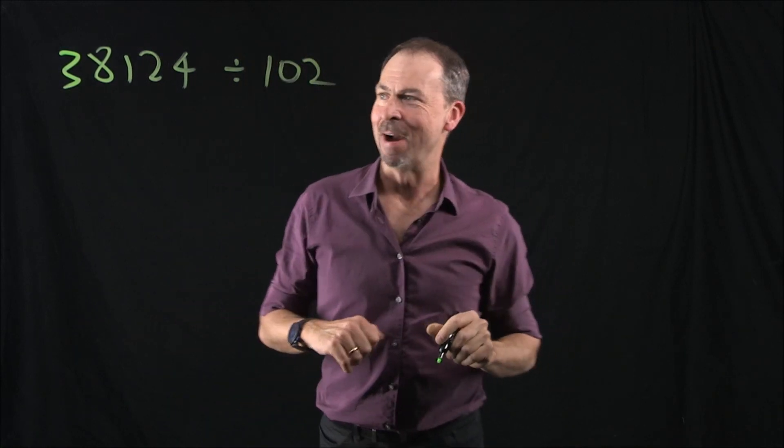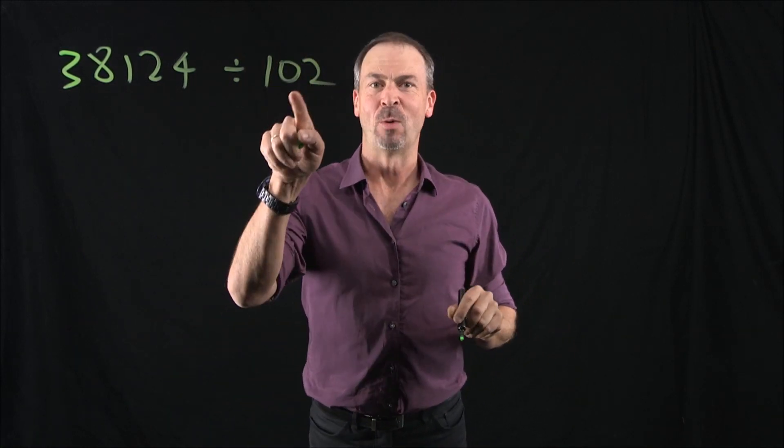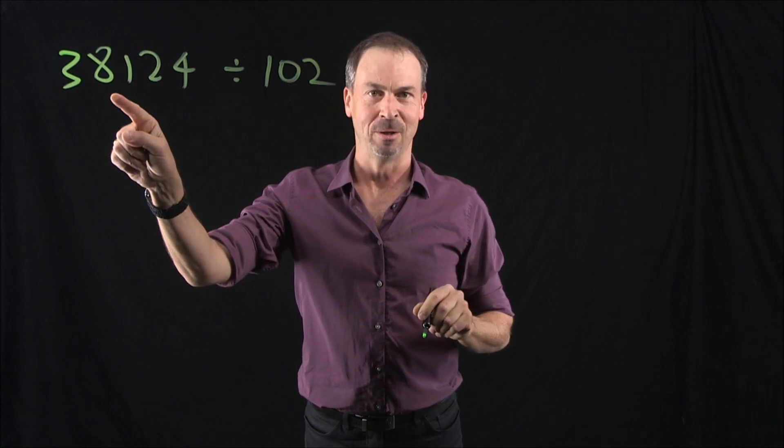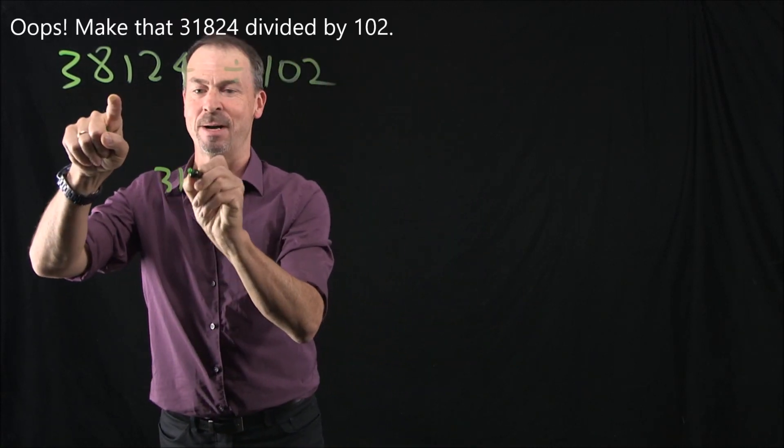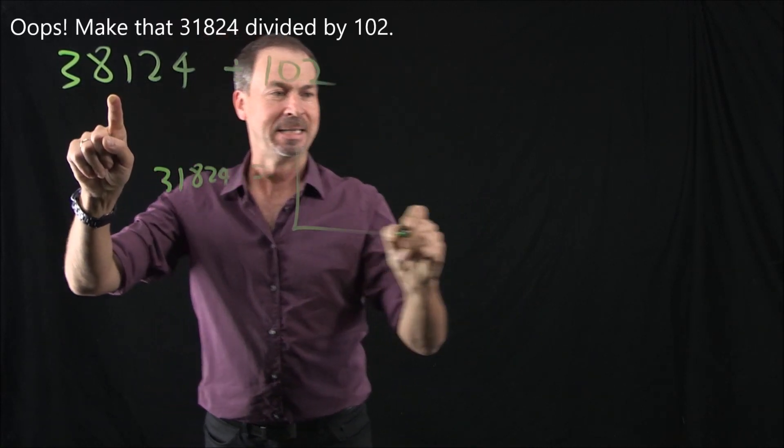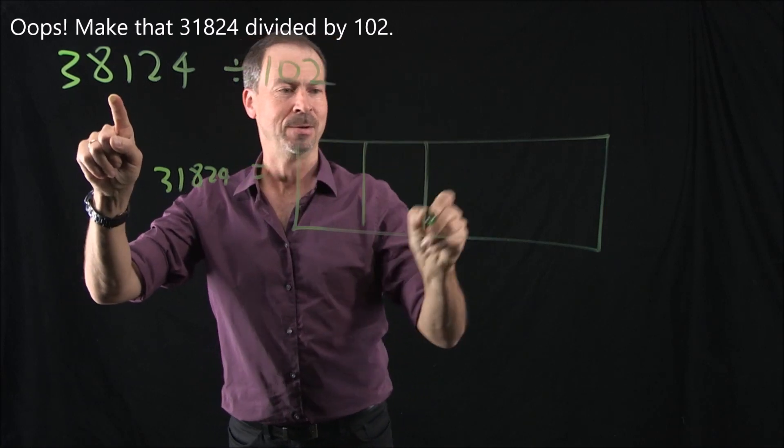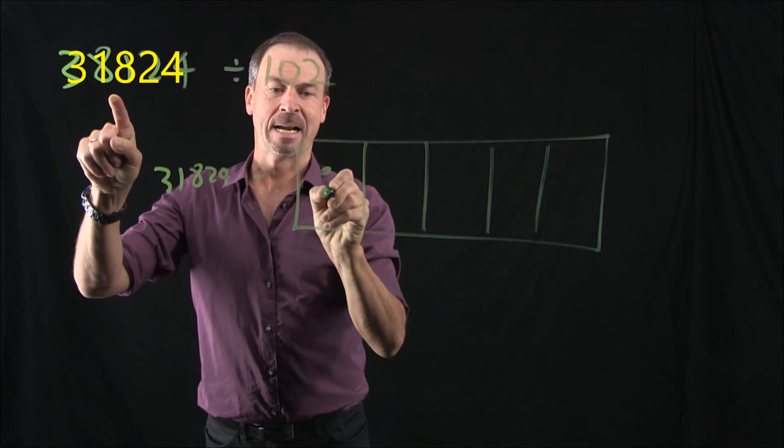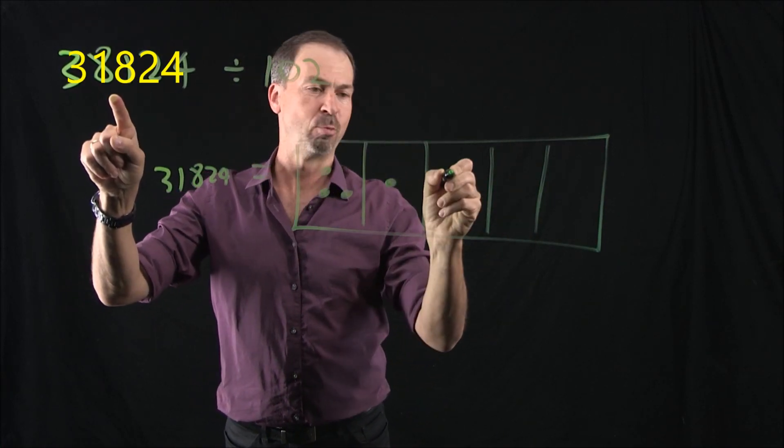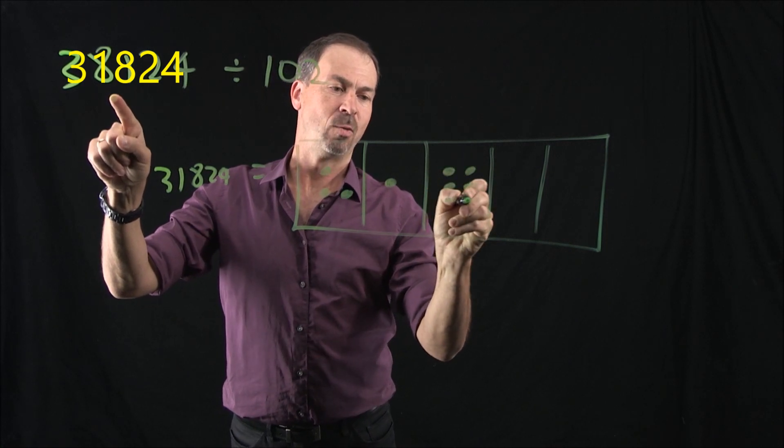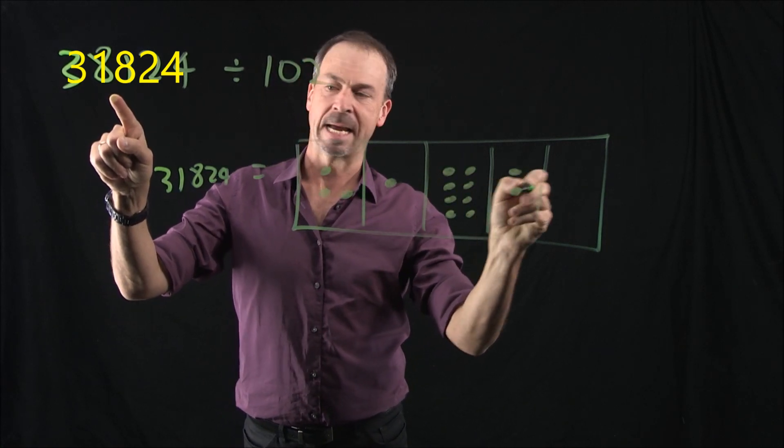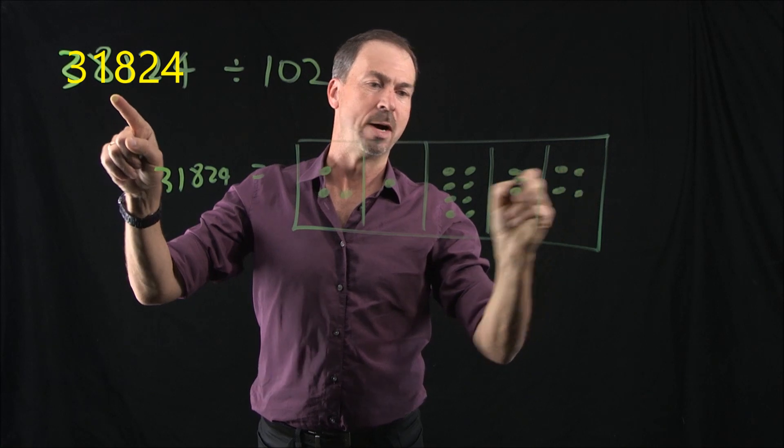Good and juicy. Alright, here goes. I'm looking for groups of 102 in a picture of 38,124. Well, let's draw a picture of 38,124. In a 10-1 machine, it will be 3 ten-thousands, 8 thousands, 1 hundred, 2 tens and 4 ones. Beautiful.